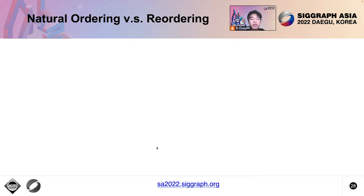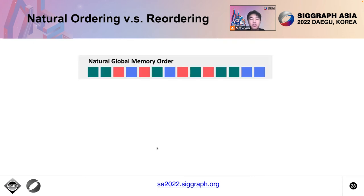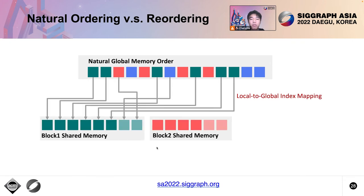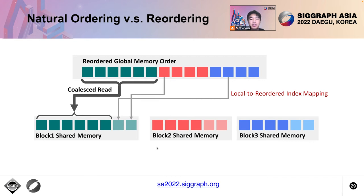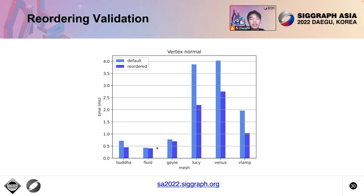Mesh attribute localization brings significant performance improvement by exploiting data locality using shared memory. However, moving attributes between global memory and shared memory still has non-negligible overhead, especially when global data access is uncoalesced. When the global index space is out of order, global memory bandwidth is bounded by uncoalesced accesses. Our compiler can reorder the global memory layout, aligning it with the local index space. Since mesh kernels may interact with external non-mesh data, layout change is not always applicable, so we provide global memory reordering as an option in the mesh definition phase. Validation results show our system takes advantage of coalesced data access, with speedups varying among different meshes.